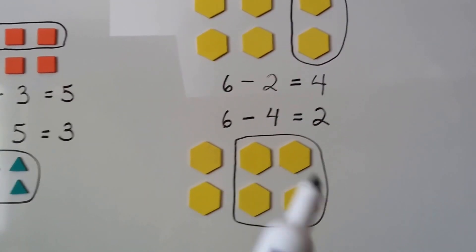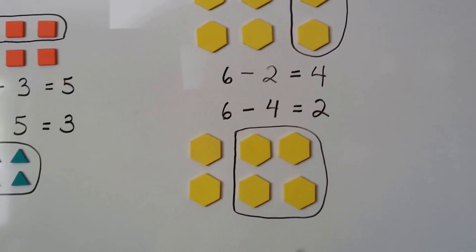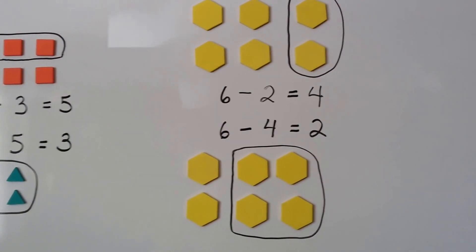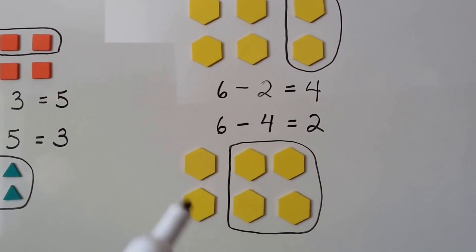Now we have 6 yellow hexagons, and if we take 4 away, we're going to have 2 left. 6 minus 4 equals 2. The difference between 4 and 6 is 2.